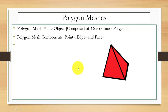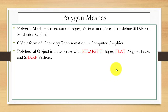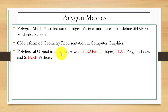The components of a polygon mesh are vertices, edges, and faces. You can see these are the vertices, edges, and two faces — as in the previous video where we formed two surfaces S1 and S2. A polygon mesh is a collection of edges, vertices, and faces that define the shape of a polyhedral object.